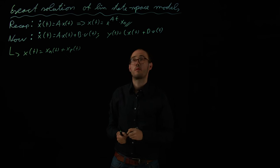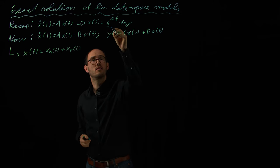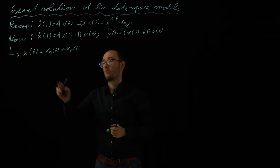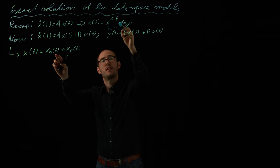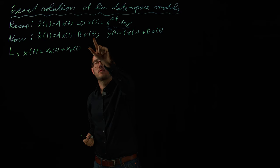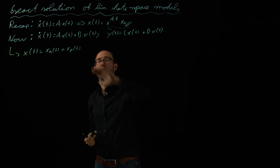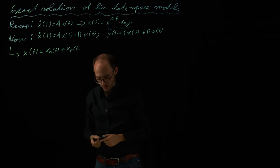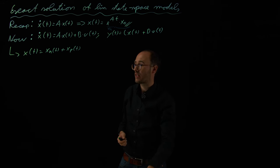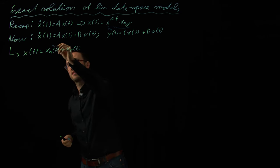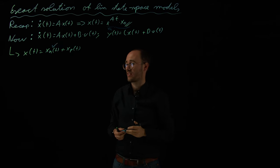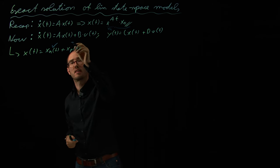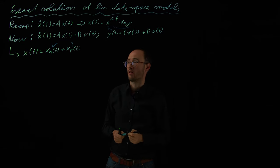The homogeneous solution we have already considered, so x_h is the homogeneous solution, because the homogeneous solution is identical to the solution of the ODE without any inputs — so for u(t) being zero. If that is zero, then the homogeneous solution of x(t) is just the solution which we have already considered. So x_h(t) has already been found, and what we need to find now is x_p(t), the particular solution.